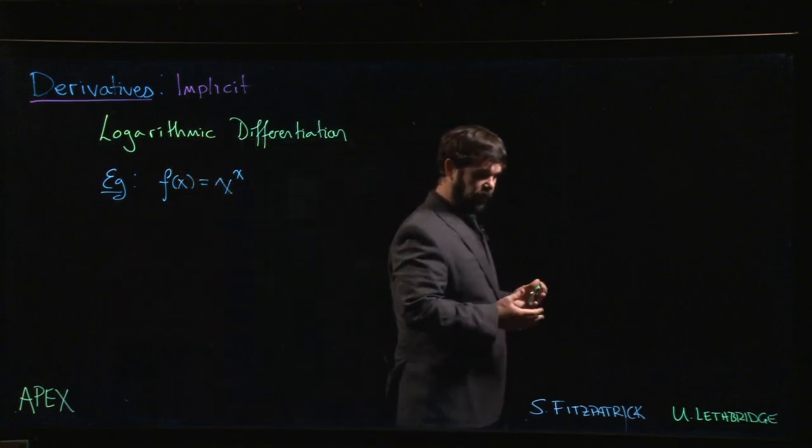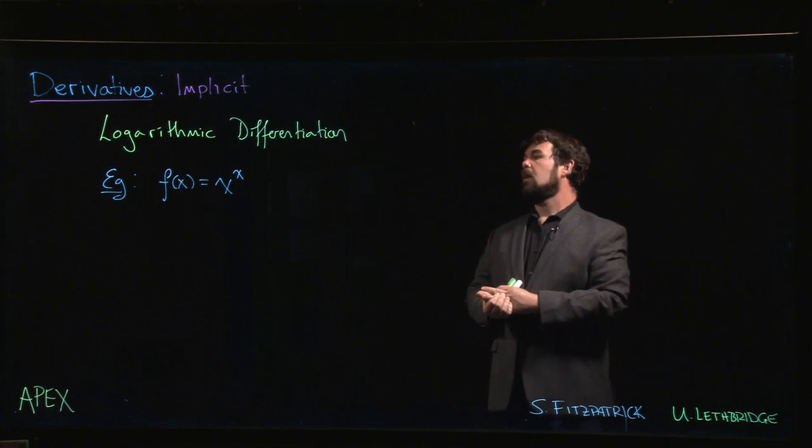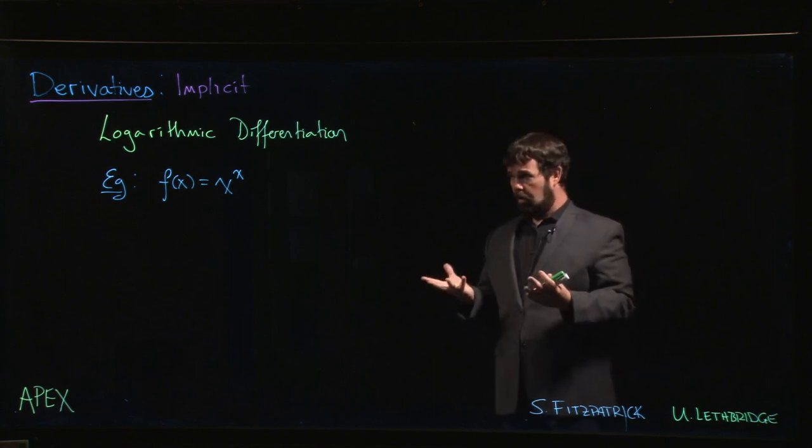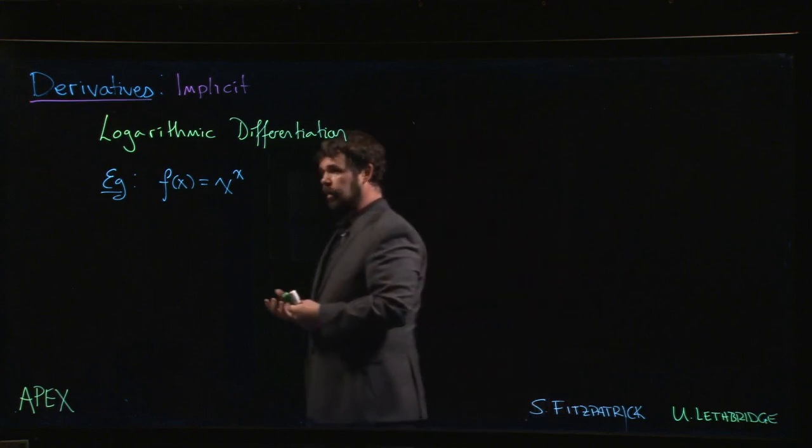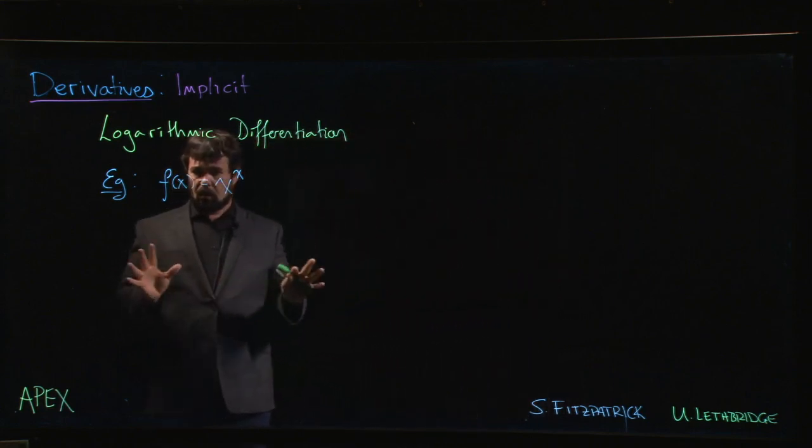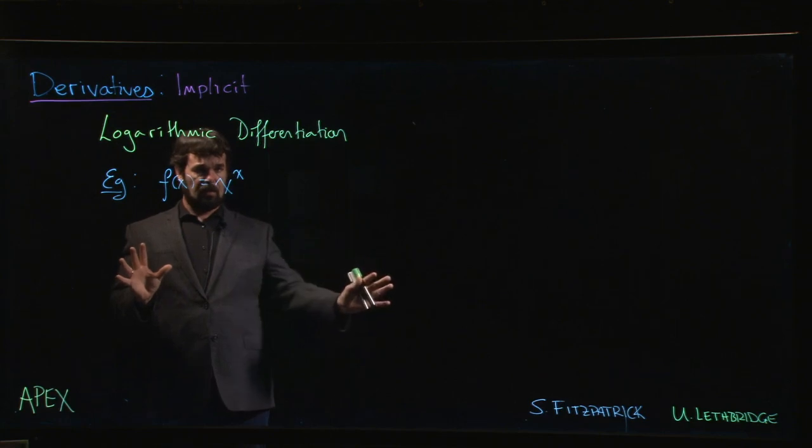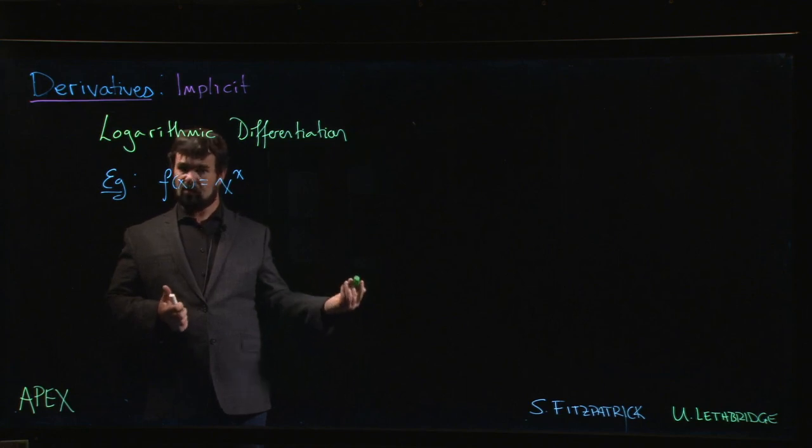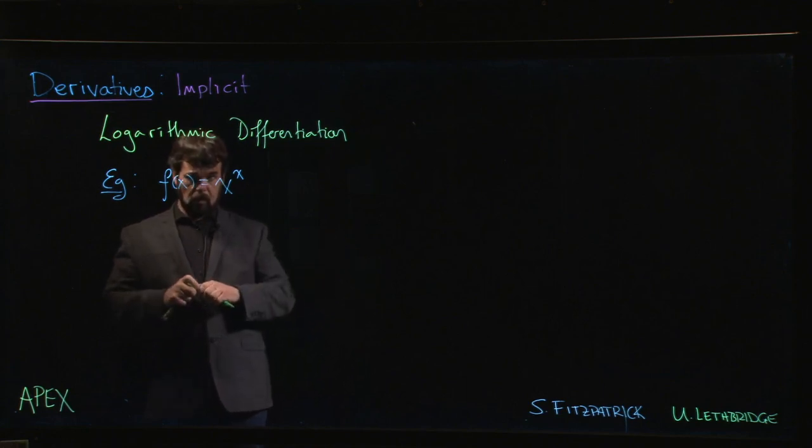If the base is a constant, we know what to do—it's just an exponential function. But here both the base and the exponent are variables, so how do you deal with this? We've already seen a bit of a hint because with the chain rule we exploited this for taking the derivative of exponential functions to other bases.